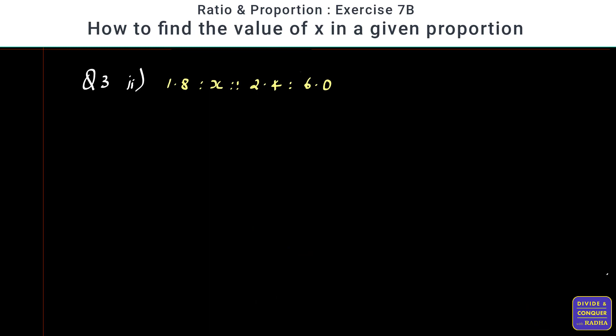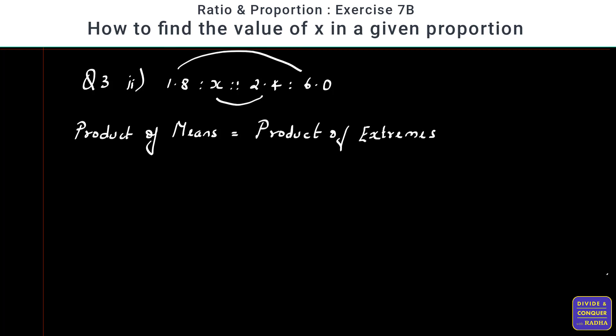The second sum is 1.8 is to x as 2.4 is to 6. We need to find the value of x given that the numbers are in proportion. x is in the mean position, so I'll equate product of means to product of extremes: x into 2.4 is equal to 1.8 into 6. Therefore x equals 1.8 into 6 divided by 2.4.